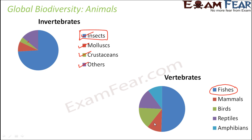Notably, prokaryotes like bacteria have not been included in these biodiversity estimates. This is because the conventional methods used to identify species are not adequate for bacteria — bacteria multiply extremely fast, increasing in number rapidly, making it difficult for traditional techniques to determine their various species. Since we cannot accurately determine bacterial species, they are excluded from the estimate.